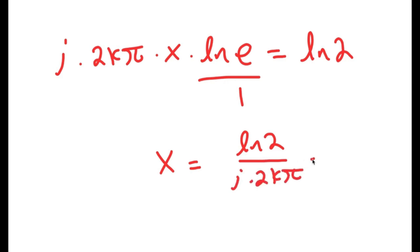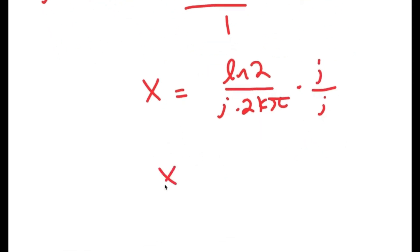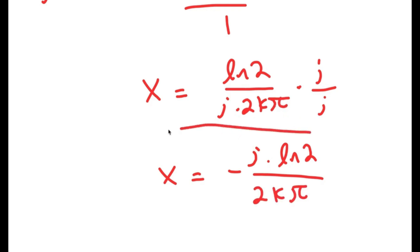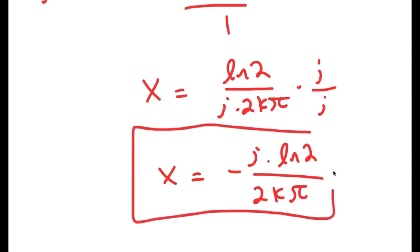Now I'm going to multiply by i over i. Since i squared equals negative 1, I get x equals negative i times ln 2 over 2k pi. This is my solution.